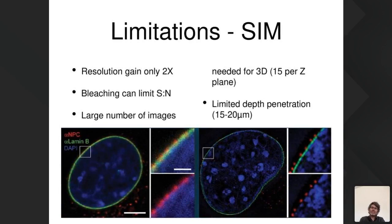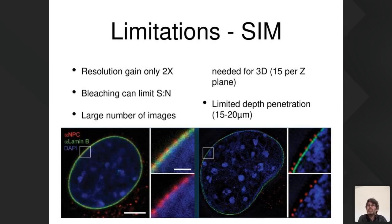Structured illumination microscopy is the technique we're using. The main limitation is you only get two times the resolution gain, but that two times is in all three dimensions. In conventional imaging, bleaching is a major problem because you have to take many images — possibly 2,000-4,000 for a 10-micron stack. However, samples in cryo have much lower bleaching rates, so you can take many more images without causing damage. Additionally, since cryo samples are completely stationary you don't have to worry about imaging rate, which is an advantage over room-temperature samples.